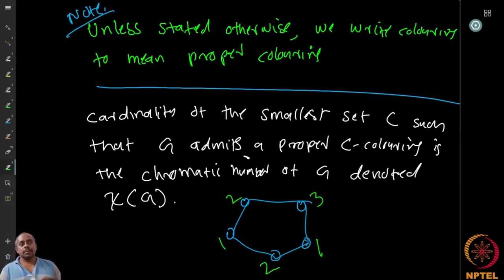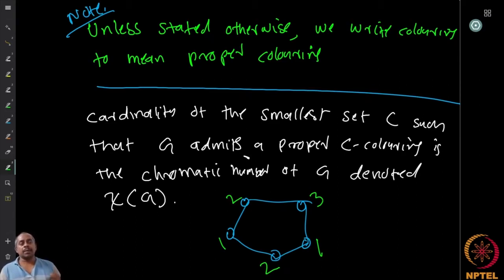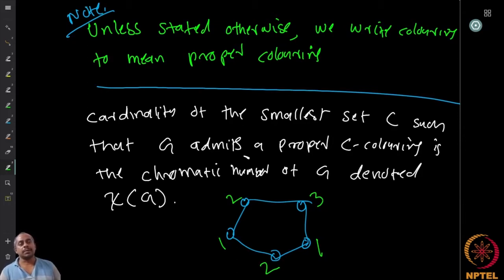Finding the chromatic number for an arbitrary graph is not an easy question. Finding the value algorithmically is NP-hard — it is not known to have any polynomial time algorithm. So it is a difficult question to find the precise chromatic number for general graphs.